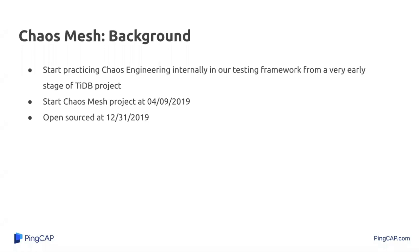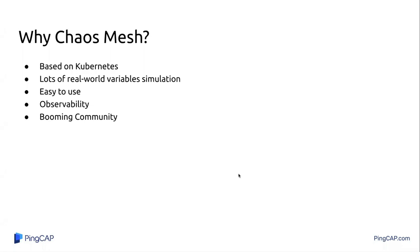Why do you need Chaos Mesh if you want to use Chaos Engineering? In my opinion, the following advantages make Chaos Mesh stand out: it is based on Kubernetes; it can provide lots of real-world variable simulations; it's easy to use and provides a dashboard so you can observe your system; and it has a growing community. Most importantly, Chaos Mesh can really help you find bugs. I will show a list of bugs found by Chaos Mesh — most are very serious, but luckily we found them before releasing the version.